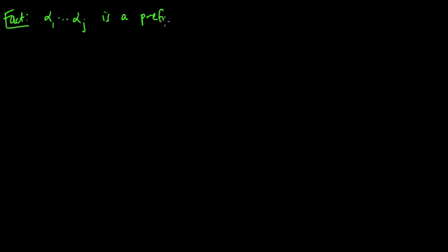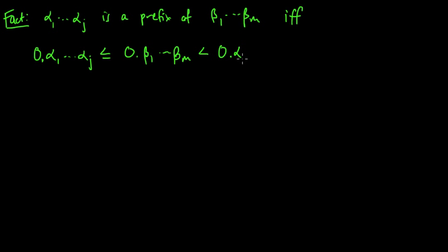This one is a prefix of the other beta 1 to beta M if and only if beta 1 to beta M, the binary number for that, falls in a certain interval corresponding to this guy. If and only if this binary number is less or equal to 0.alpha_1 up to alpha_J is less or equal to 0.beta_1 up to beta_M is less than 0.alpha_1 up to alpha_J plus 1 over 2 to the J. J is the J-th place here. So it's the number of characters or symbols in this string. And these here, I'm assuming these are binary strings. If they were not binary, then we would use B here instead of 2.